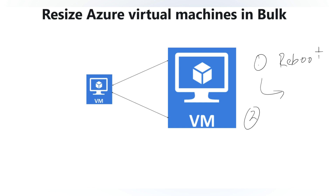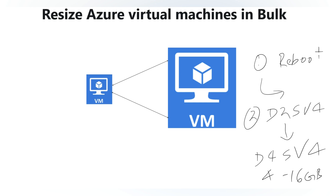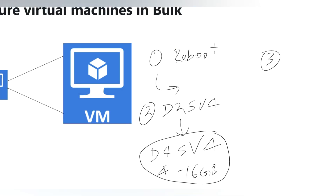The second point is virtual machine availability. For example, if your current size is D2sv4 and you want to change to D4sv4 — which is 4 vCPU and 16GB RAM — make sure that VM SKU is available in your region. Not all virtual machine SKUs are available in every region, so before doing the resize, verify the availability of the VM SKU in your region.